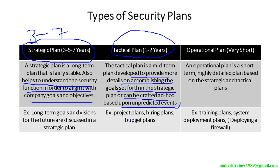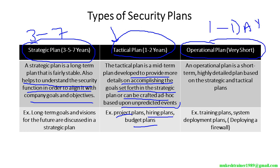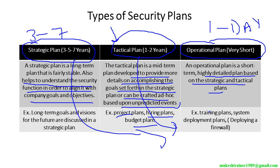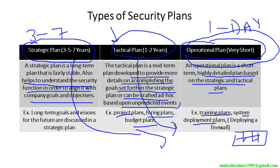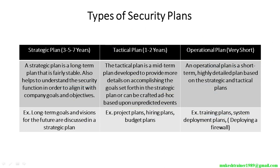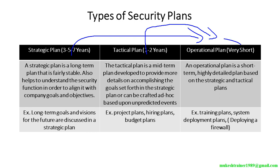Tactical plans cover things like a small project, a project plan, hiring plans, or a budget plan — that will go for 1 to 2 years. The operational plan lasts for a very short time: 1 day, 1 month, depending on the kind of work. It is a highly detailed plan based on both the strategic and tactical plans — company training plans, system deployment plans. If a company needs to deploy a server, firewall, or router, that can be done in the operational plan, and all troubleshooting or protection of machines is also handled here.